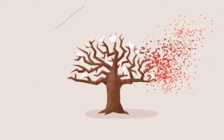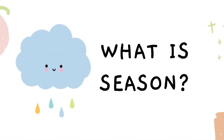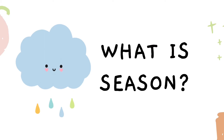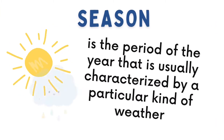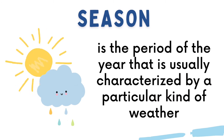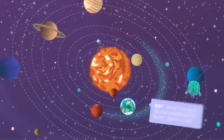But can you explain how seasons are formed? To explain that, let us first discuss what a season is. Season is the period of the year that is usually characterized by a particular kind of weather.